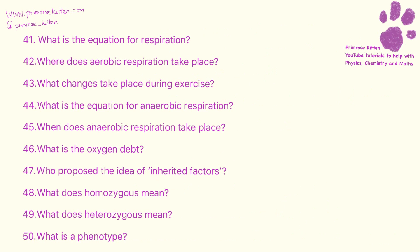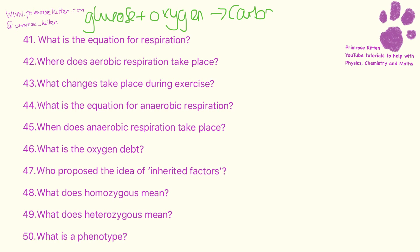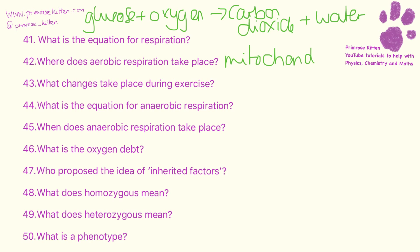The equation for respiration is: glucose plus oxygen goes to carbon dioxide and water. Aerobic respiration takes place in the mitochondria. And during exercise you're going to see a number of changes, including an increase in heart rate and breathing.